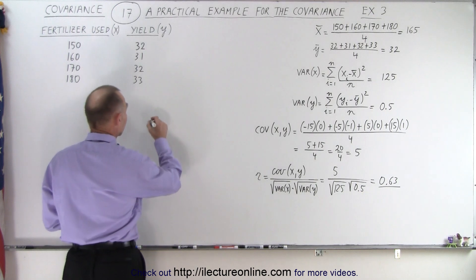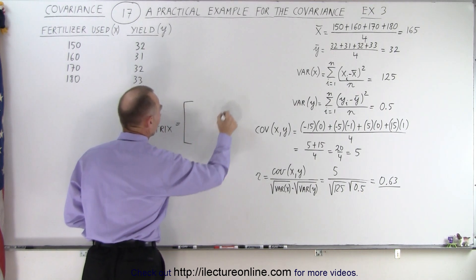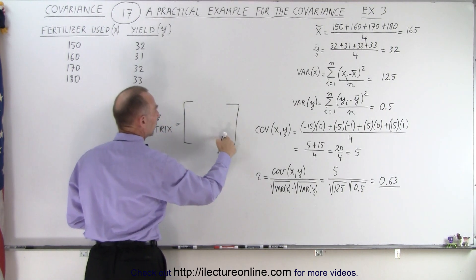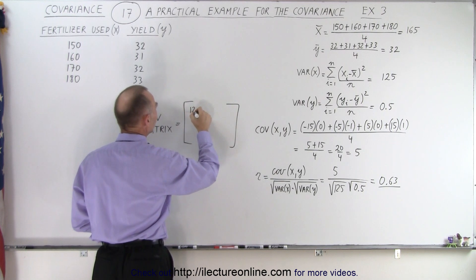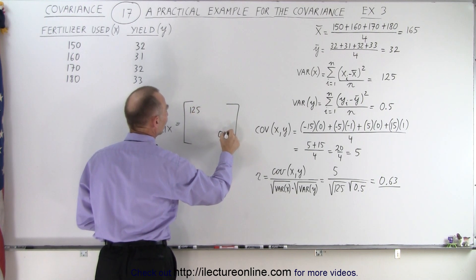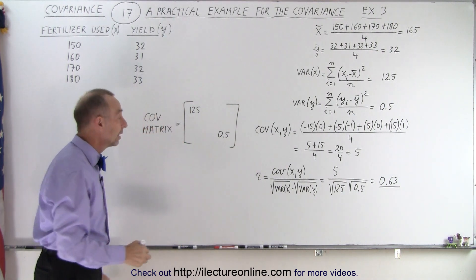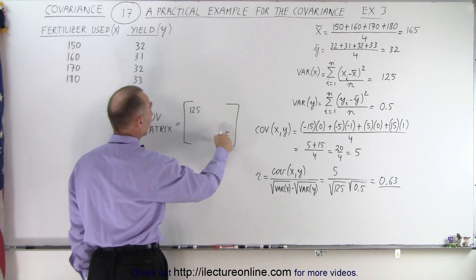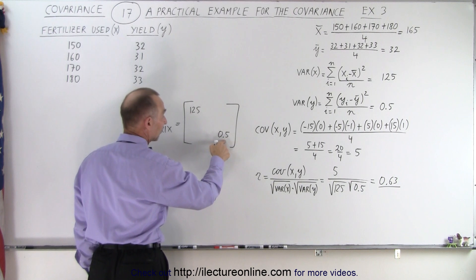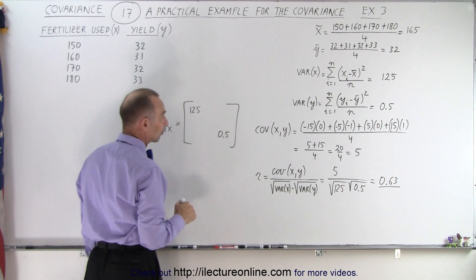What does the covariance matrix look like? Again, we have the diagonal elements, which represent the variances, 125 and 0.5. So you can see there's a very tiny variance in the yield. This alone already tells you there's not a lot of effect on the change in the yield when you change the fertilizer by a lot.